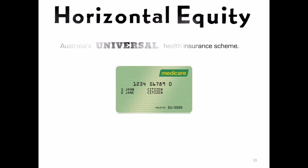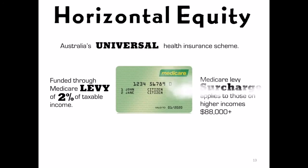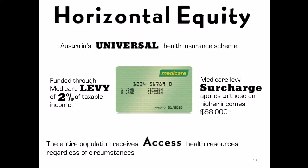Horizontal equity is about spreading resources across the entire population so that everybody has access. A great example is Medicare, Australia's universal health insurance scheme, funded through the Medicare levy — a 2% levy placed on the taxable income of all Australians that work. The Medicare levy surcharge comes into place when a person earns more than $88,000. The whole population contributes, allowing access to health resources regardless of someone's circumstances — that's horizontal equity.